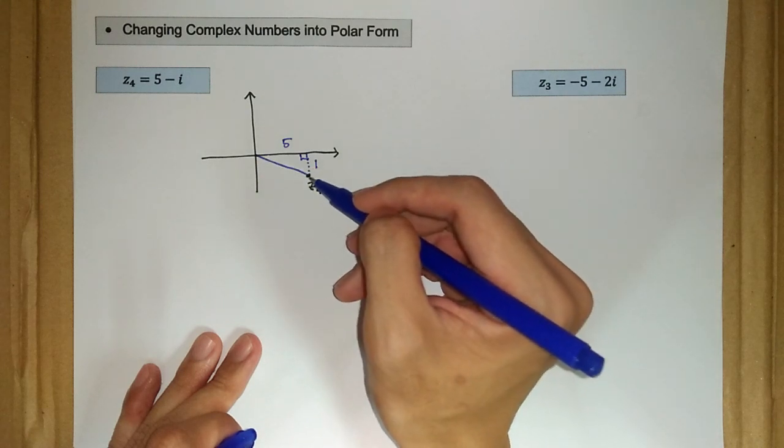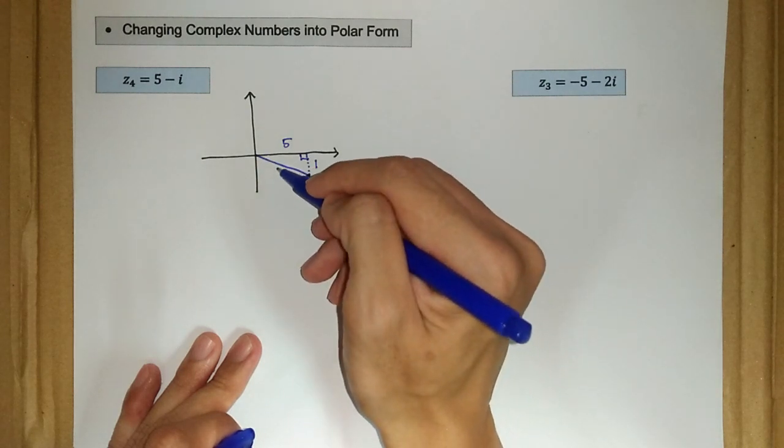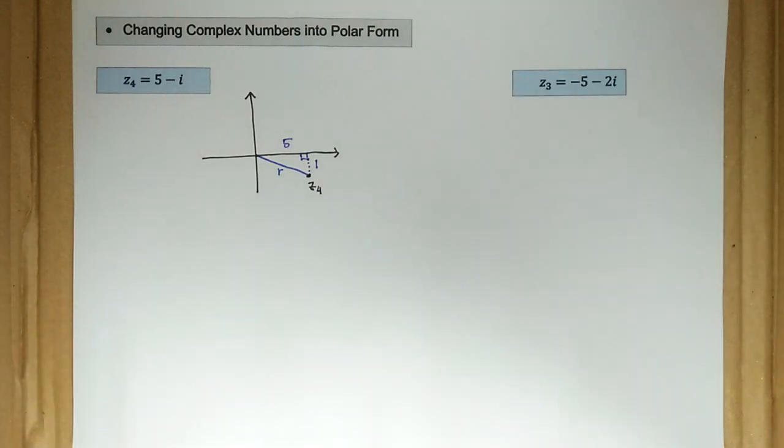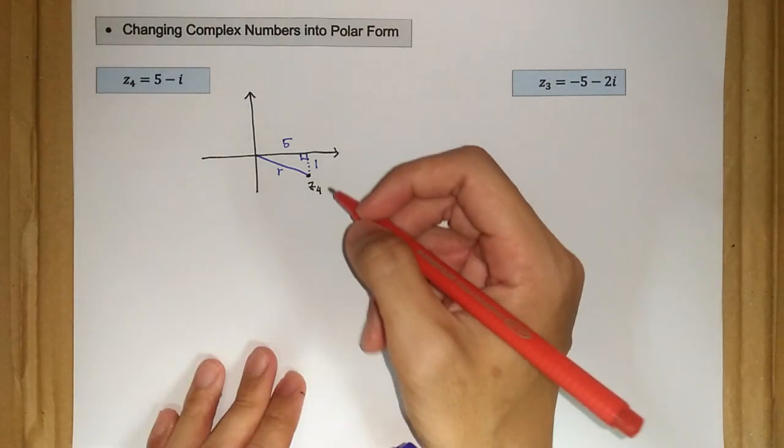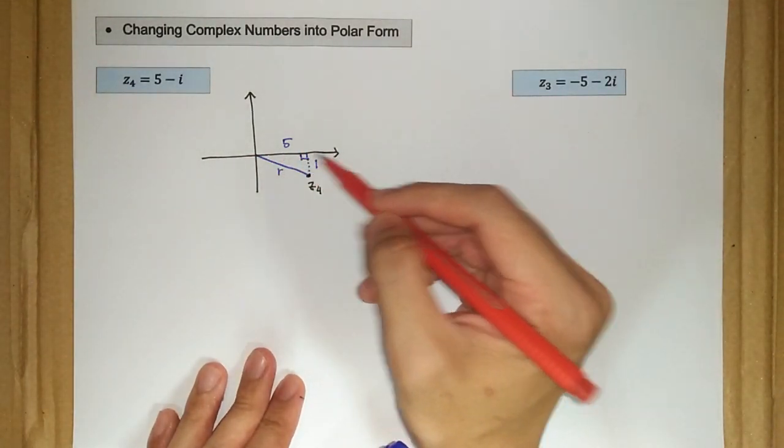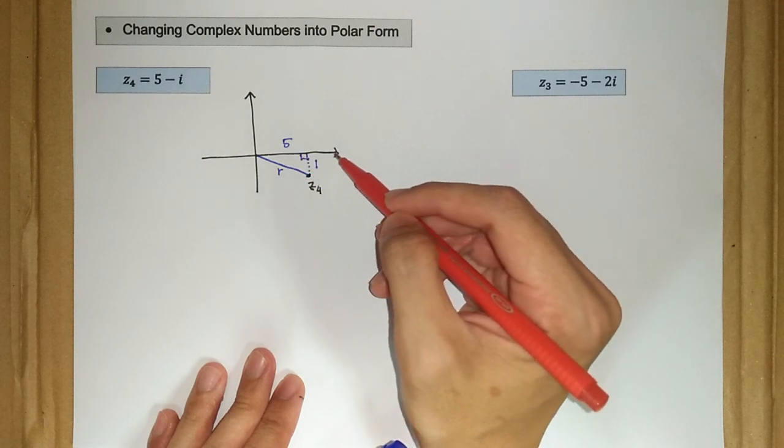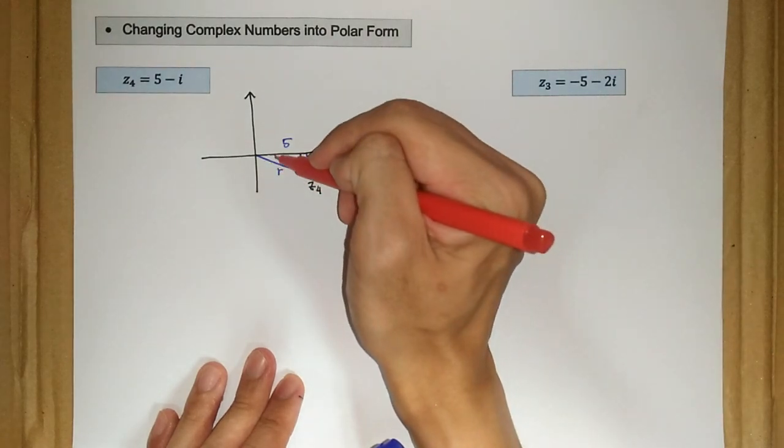We have our right angle here. So this is our modulus here, from the origin to the point z₄. This is our r or modulus, and we also have our argument or theta, the angle measured from the positive real axis.